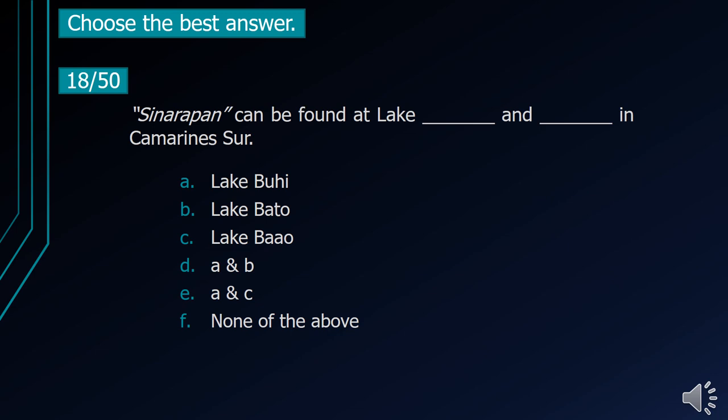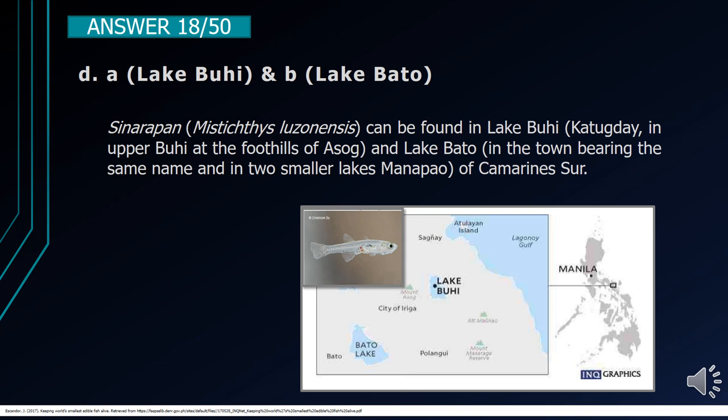Number 18. Sinarapan can be found at Lake blank and blank in Camarines Sur. A. Lake Buhi. B. Lake Bato. C. Lake Bow. D. A and B. E. A and C. F. None of the above. The correct answer is letter D, A and B. Sinarapan (Mystichthys luzonensis) can be found in Lake Buhi and Lake Bato, as well as two smaller lakes in Camarines Sur.